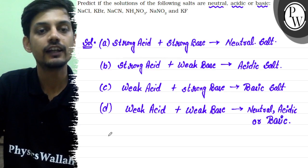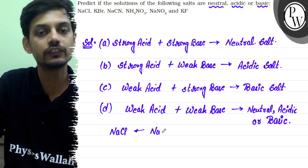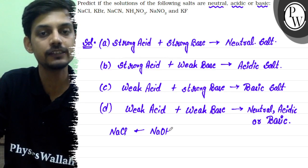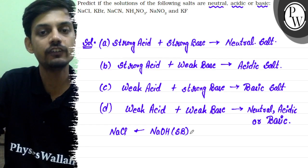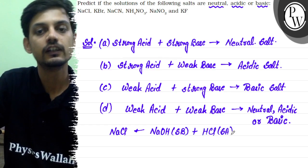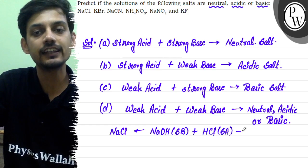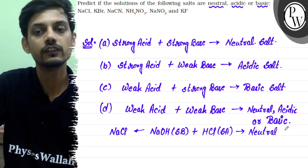The first salt given is NaCl. NaCl is formed by the neutralization of NaOH, which is a strong base, with HCl, which is a strong acid. So this belongs to our first category, and NaCl will be a neutral salt.